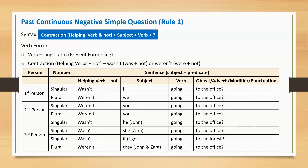Third person plural: Weren't they going to the office? In place of pronoun 'they', we can mention the names — Weren't John and Zara going to the office?